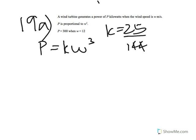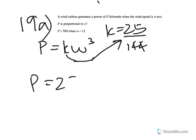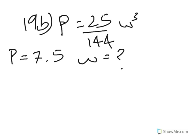Now that we know what K is, we substitute it into the equation. What we get is P equals 25 over 144 times W cubed. This is our formula for P in terms of W — P equals (25/144)W³.